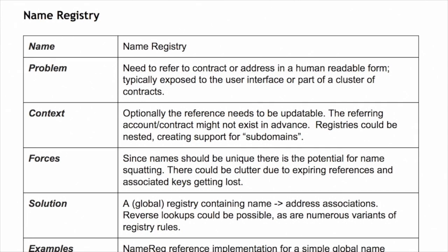We have another contract here — a name registry. Name registry is one of my favorite design patterns. Before, you had to create your own coin to make a name registry, like Namecoin. Now you can do it with one contract, and you can custom design your own incentive structure — what it takes as collateral to register a name. You can experiment with different ways of incentivizing registration, expiration, bidding on names, market dynamics, dual ledgers, and limits on the number of things people can register.